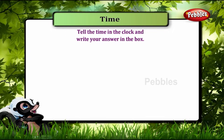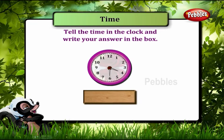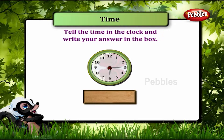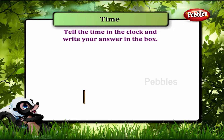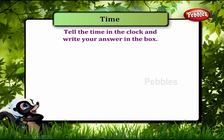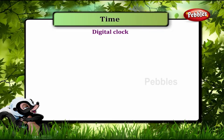Tell the time in the clock and write your answer in the box. This clock shows 4:30, this one 6:15, this 7:45 and this one 10:10.